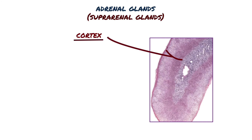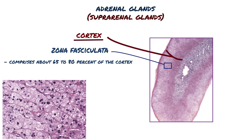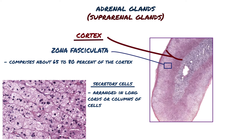Moving deeper into the adrenal gland, the zona fasciculata is the largest of the three zones and comprises about 65–80% of the cortex. Instead of clusters of cells like those in the zona glomerulosa, the secretory cells in this layer are arranged in long cords or columns of cells, often just one to two cells thick, aligned perpendicular to the surface of the adrenal gland. These cells have a larger amount of lipid-filled cytoplasm that results in a lighter stain and a foamy appearance.